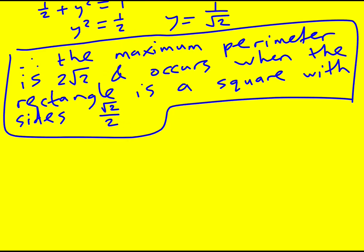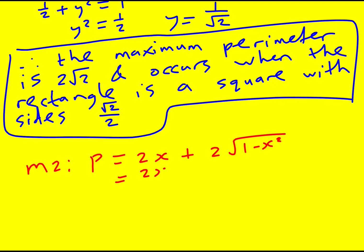Now let me go through method two, which uses calculus. This assumes you've done some reading on calculus or are studying A-level. We write the perimeter as p equals 2x plus 2 times the square root of 1 minus x squared — derived earlier — and then differentiate.